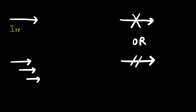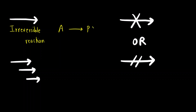The first arrow is called the irreversible reaction arrow. Irreversible reaction means suppose I have reactant A that is getting converted to product P. This forward reaction is possible — product can be formed from the reactant — but the opposite reaction is not possible. The product cannot be converted back to the reactants. Reversible means it can be converted back; irreversible means product cannot be converted back to reactant.